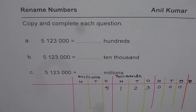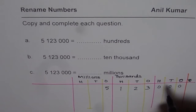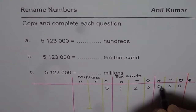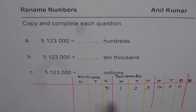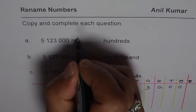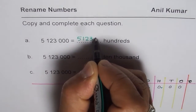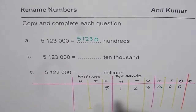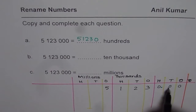Now the question is how to write this number as hundreds. Once you have written the number in the chart, go to the hundreds column — that is the hundreds place for you. Put a decimal there, so we have everything to the left of the decimal as the number in hundreds. We get 51,230 hundreds. That's the answer: 51,230 hundreds.